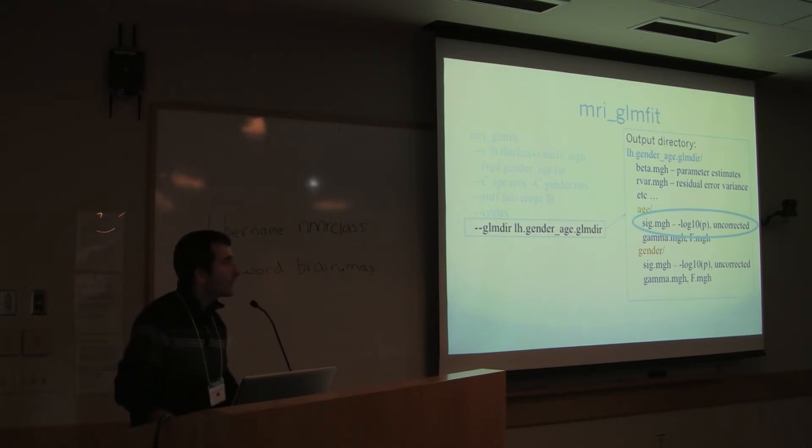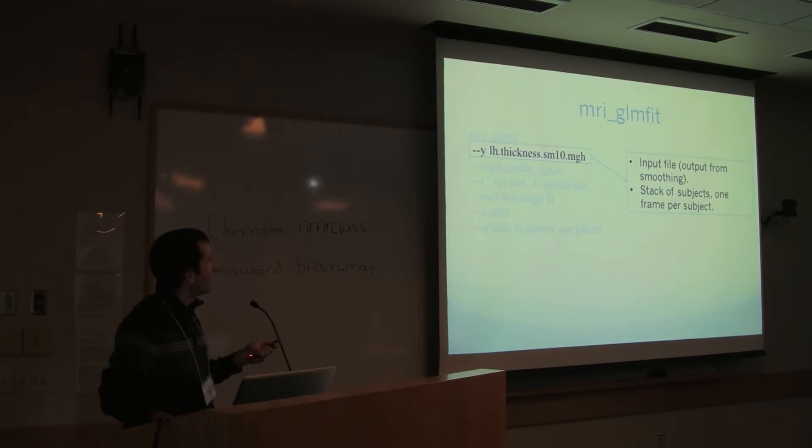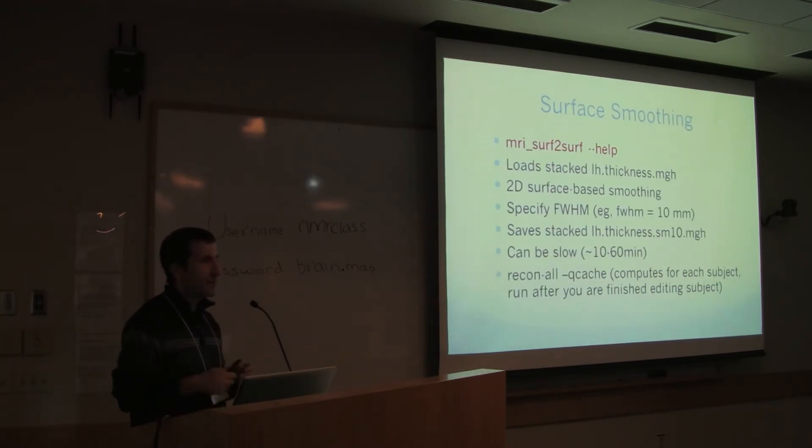So the question is what's smooth here? This is coming from this guy here. So we have a thickness map defined on the surface, and that thickness map can be noisy. So you can smooth the surface first.